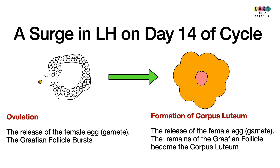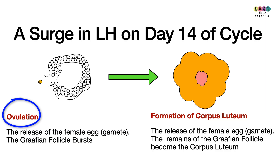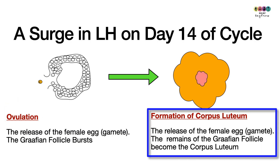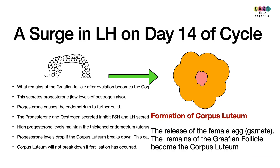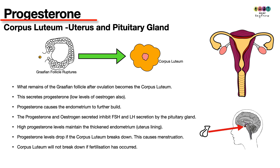To be clear, it is a surge in Luteinizing Hormone on approximately day 14 of the cycle that causes ovulation — the rupture of the Graafian follicle to release the egg. The cells that remain of the Graafian follicle turn into the structure known as the corpus luteum.